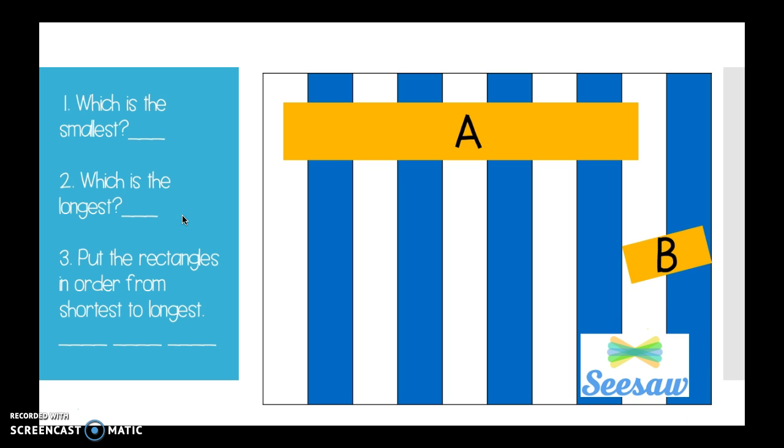I'm giving you three new rectangles. On your dry erase board, I want you to write the numbers one, two, and three. And you're going to answer question number one, then answer question number two, and then answer question number three. Question number one says, which is the smallest? So on that line, you're going to write down which letter rectangle is the smallest. You're going to have to use the stripes behind them to help figure it out.